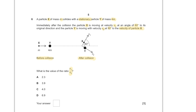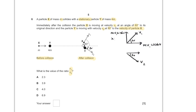For particle X, the horizontal component is mv1 cos 60 and the vertical component is mv1 sin 60. For particle Y, this angle is 30 degrees, so the horizontal component is 4mv2 cos 30 and the vertical component downward is 4mv2 sin 30. Now, we can't easily use horizontal momentum because we don't know the initial speed of X, which would introduce another unknown.